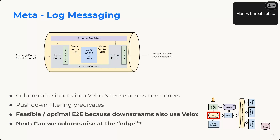This approach allows columnarization and paying the deserialization tax only once, so multiple downstream applications can use the same optimal representation. Since all downstreams speak Velox as a common lingua franca, filtering predicates can be evaluated at the most appropriate layer. The next step is working on Velox-native data generation even upstream at customer layers, avoiding serialization altogether for sources that can generate voluminous data patches.